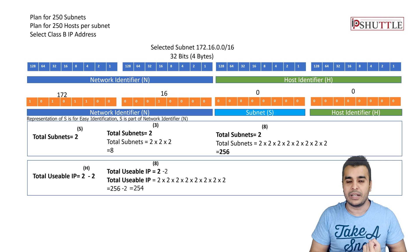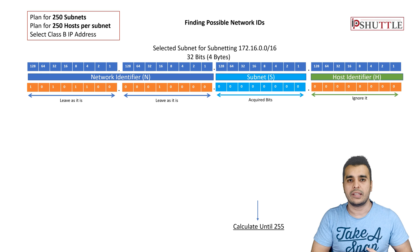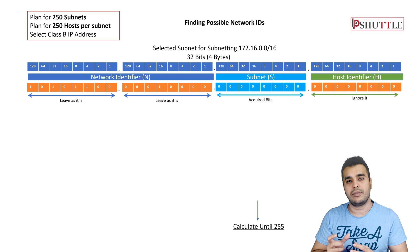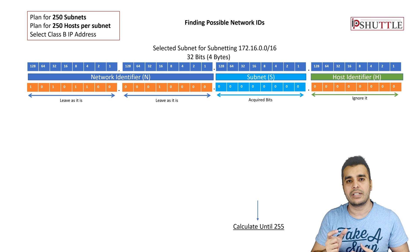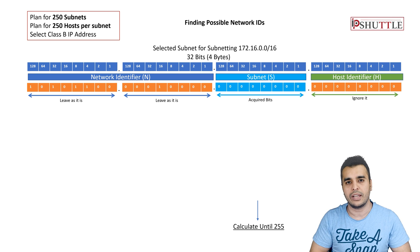We need 8 bits from the host identifier to make them part of the network identifier. The remaining bits will be used for IP address assignment. Now let's calculate the available network IDs. We will use the previous example with 8 bits reserved for subnetting. Taking the decimal format of 172.16.0.0 and placing it in our diagram, we will not change the first two octets — only the third octet will change.